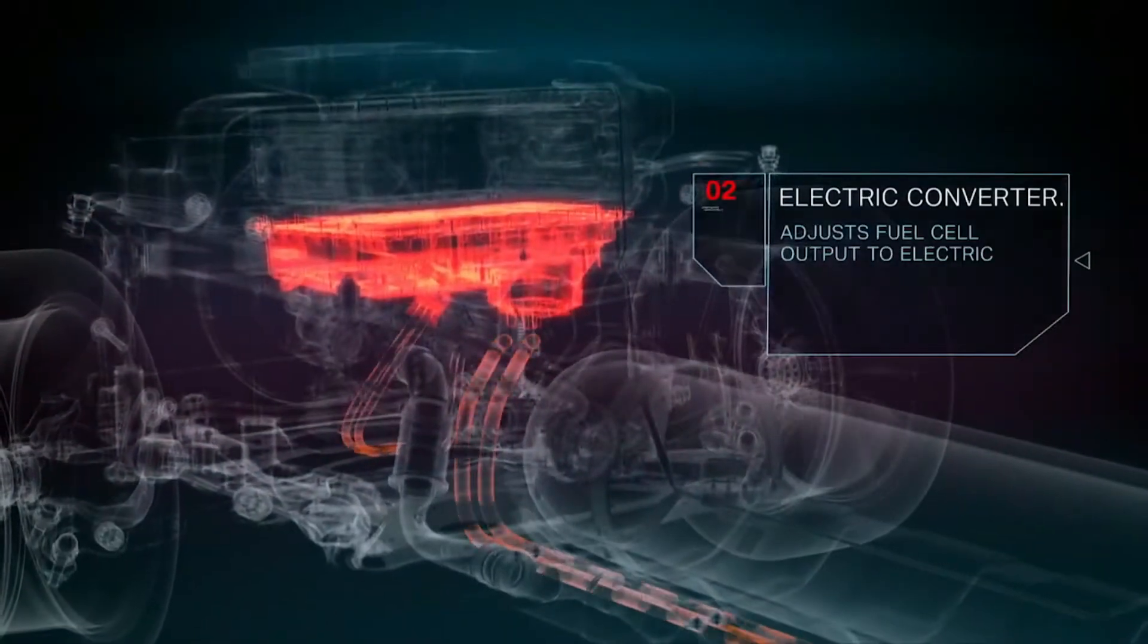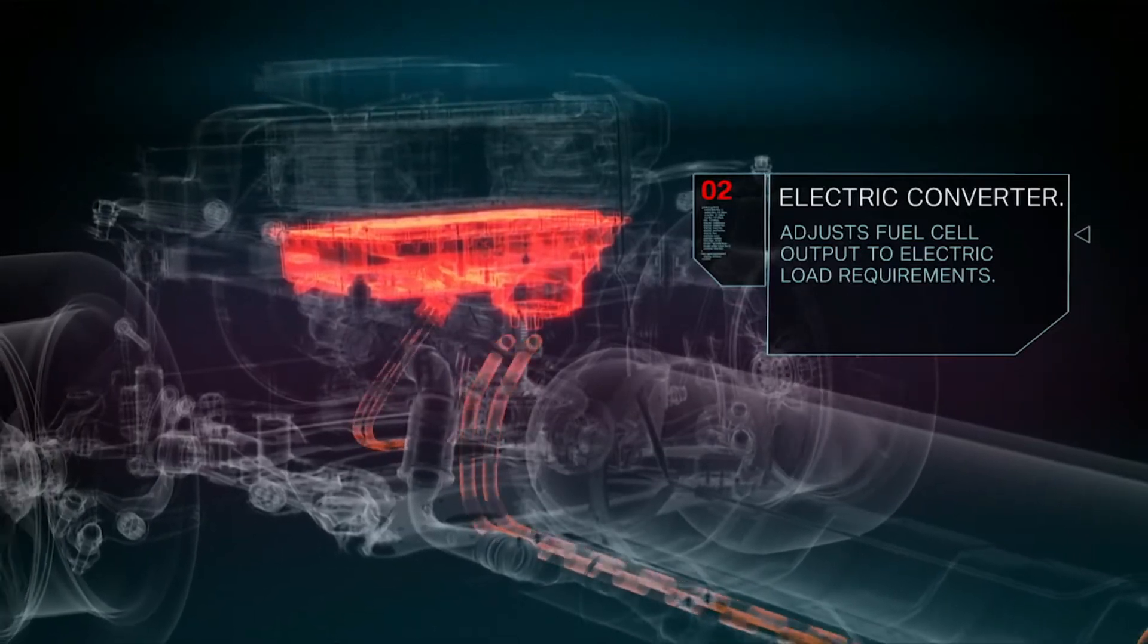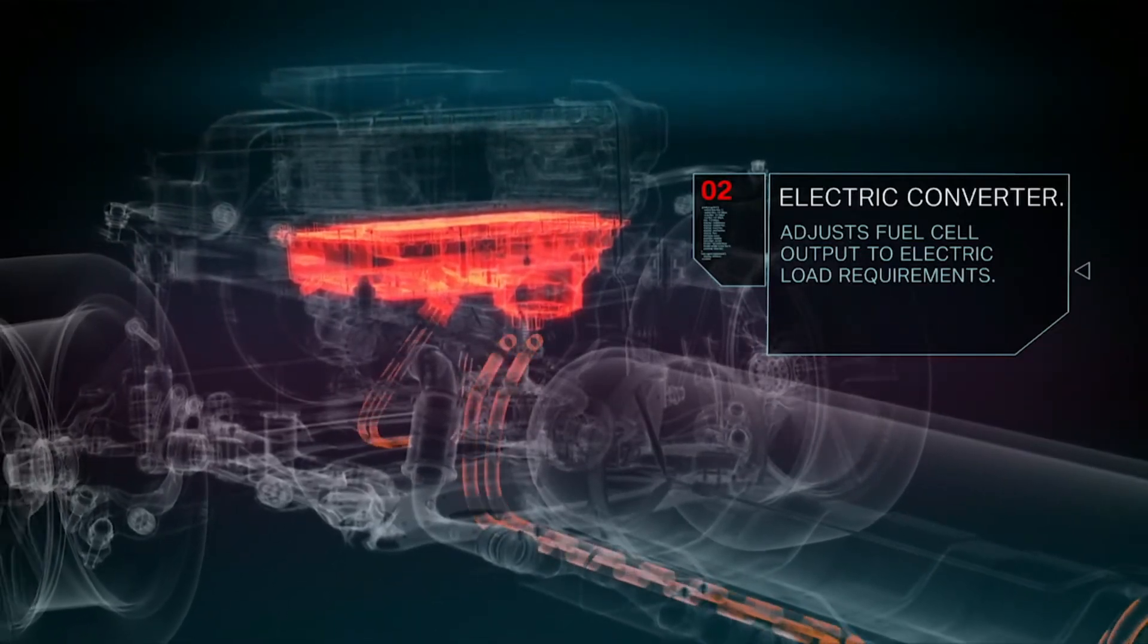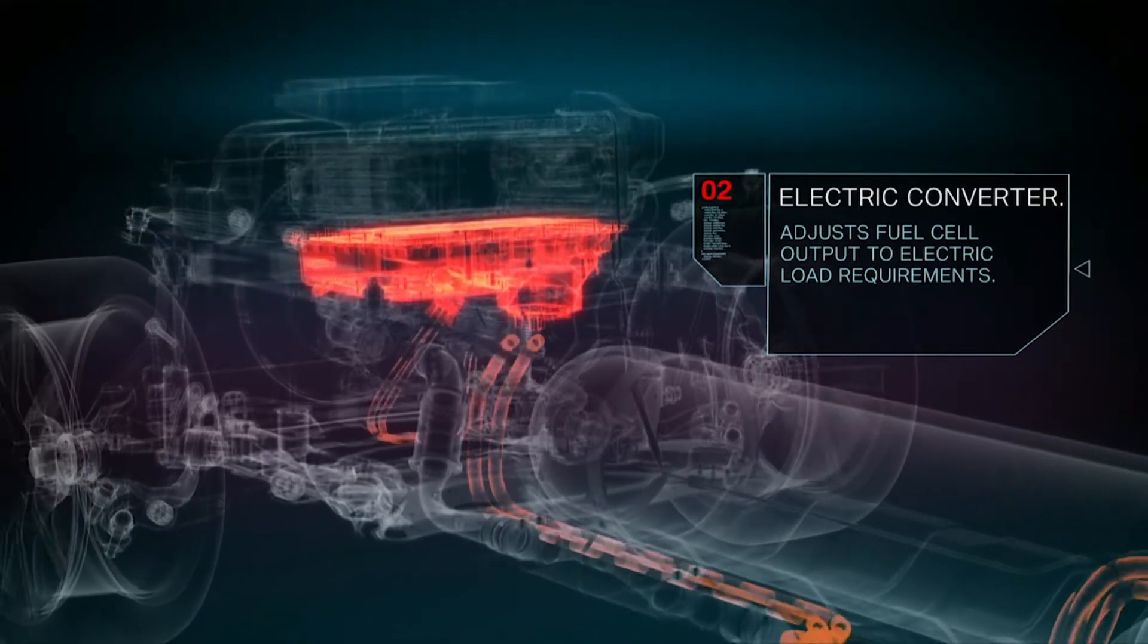The electric converter is located below the fuel cell stack. It adapts the voltage level from the fuel cell to the voltage level of the electric powertrain and the peak power battery.